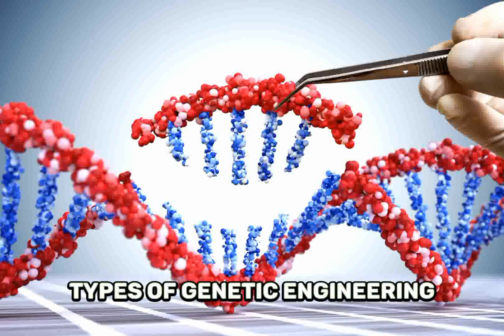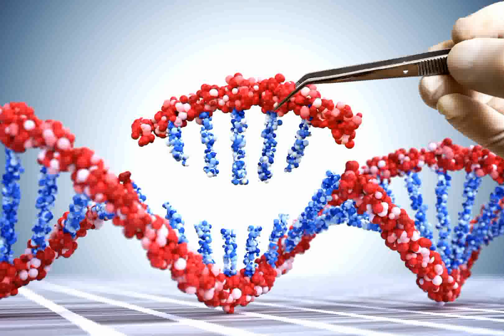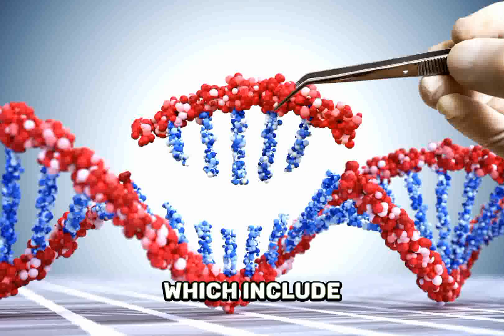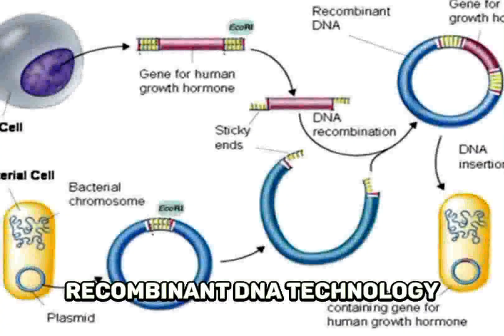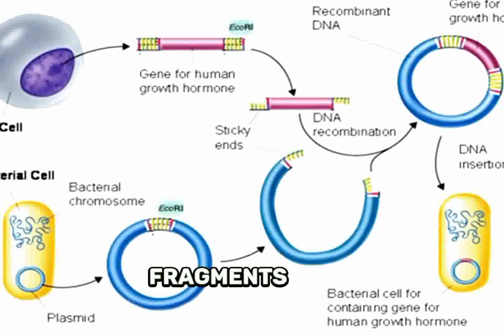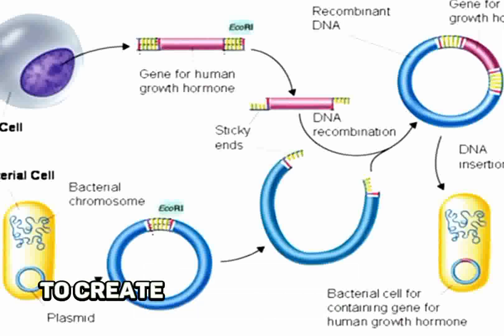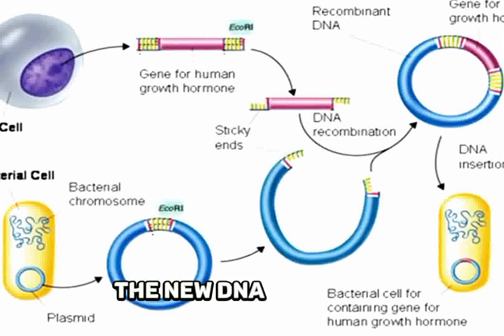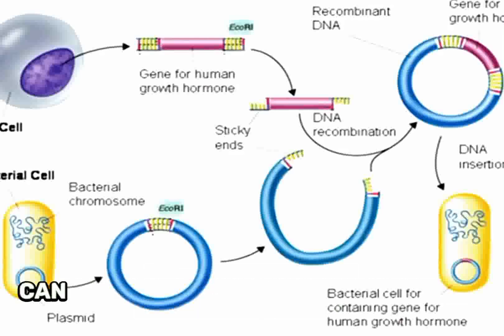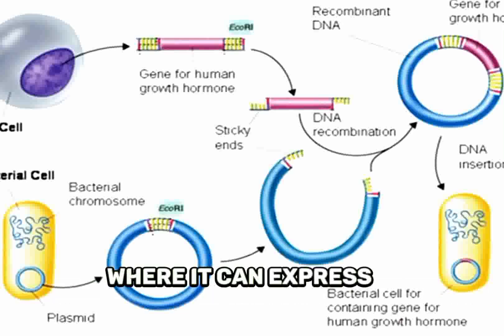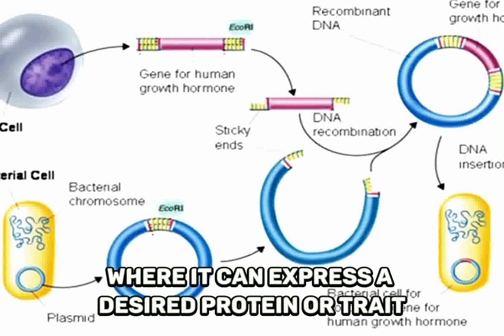There are several types of genetic engineering. Recombinant DNA technology involves cutting and splicing DNA fragments from different sources to create a new genetic sequence. The new DNA sequence can be inserted into a host organism, where it can express a desired protein or trait.